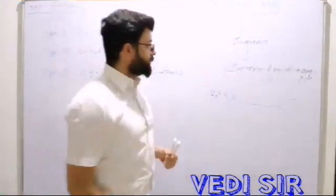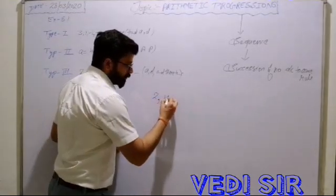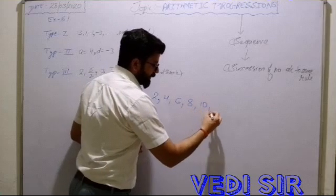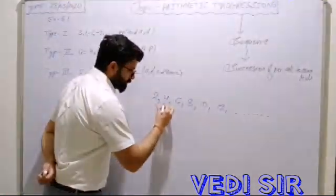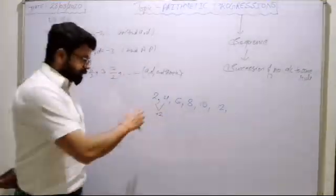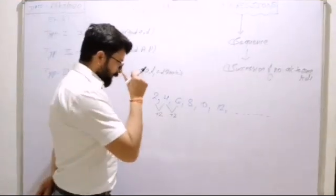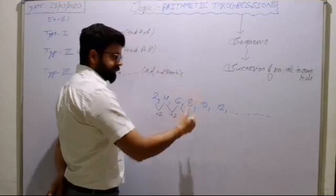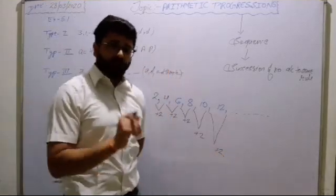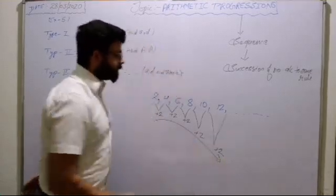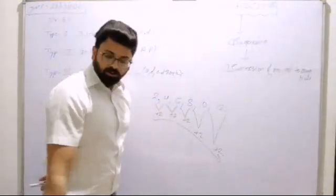Let me tell you what kind of sequence comes in arithmetic progression. Take the two-times table: 2, 4, 6, 8, 10, 12, and up to infinity. Here, if you add plus 2 to the preceding term, you get the next term: 2 plus 2 equals 4, 4 plus 2 equals 6, 6 plus 2 equals 8. The rule is common for each term. In a progression, we are adding a fixed amount to the preceding term to get the succeeding term, and that fixed amount must be equal for all terms.